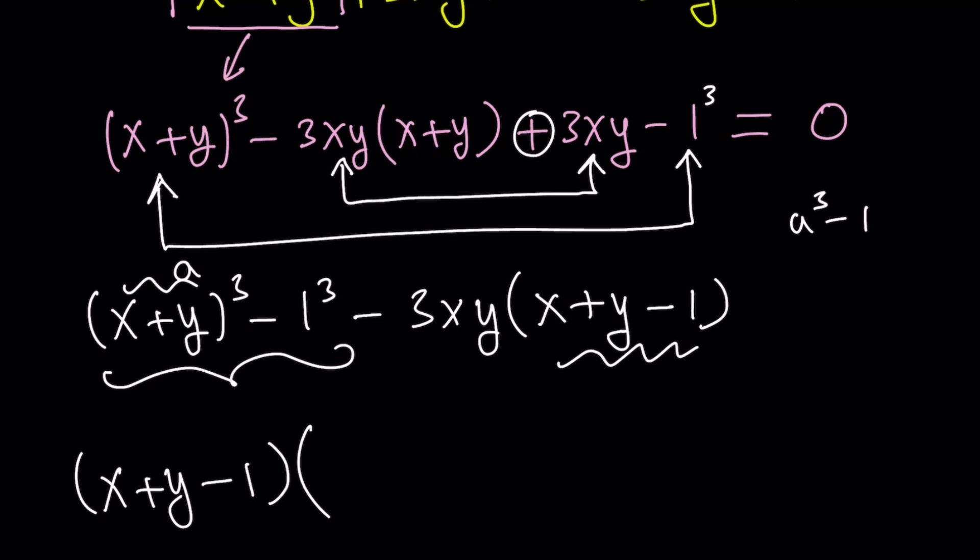The second factor is going to be a squared plus ab. By the way, x plus y is a here. x plus y plus b cubed, which is 1. Then minus 3xy times x plus y minus 1.